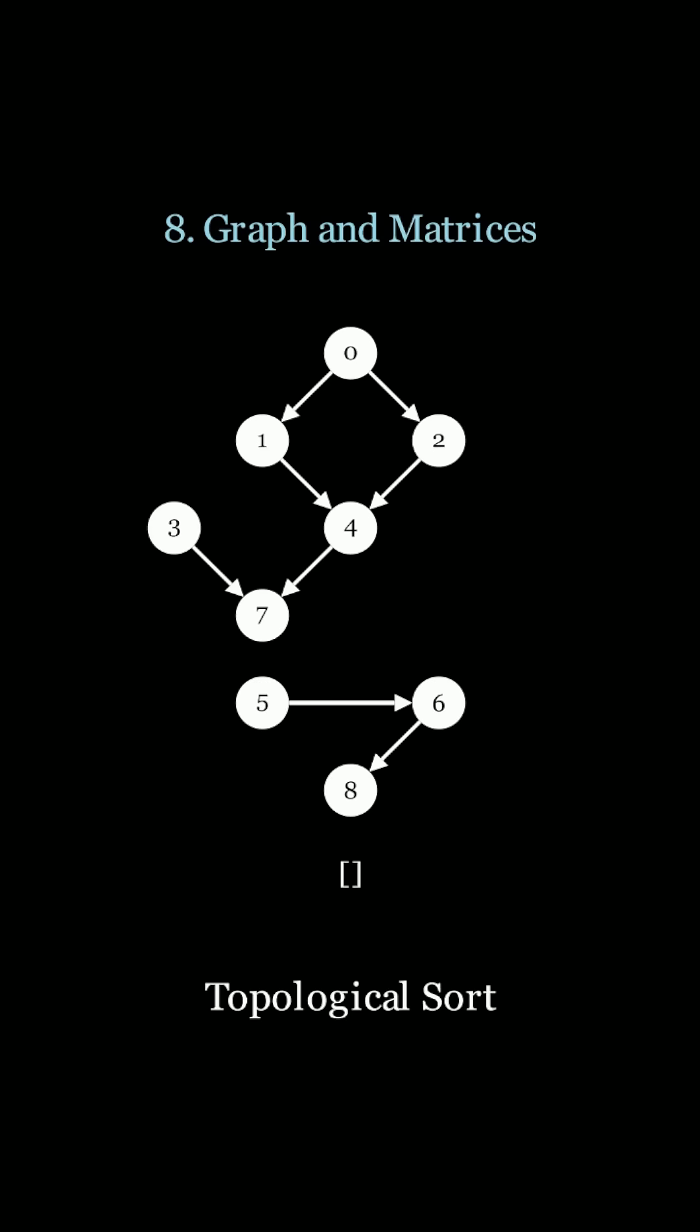So node zero is a prerequisite to visit nodes one and two. And so topological sort is trying to find the ordering that's valid, where you need to explore all the prerequisite nodes before the nodes that require them. Topological sort uses a variation of DFS to keep track of which nodes to visit first.